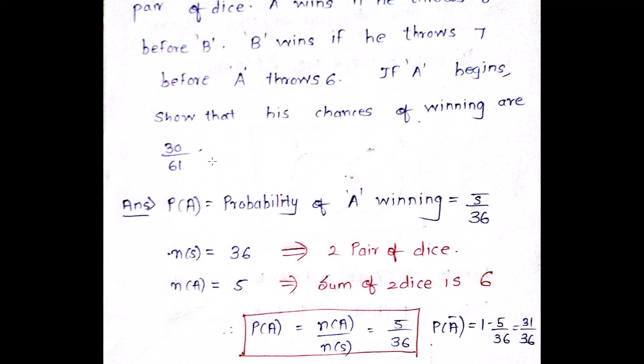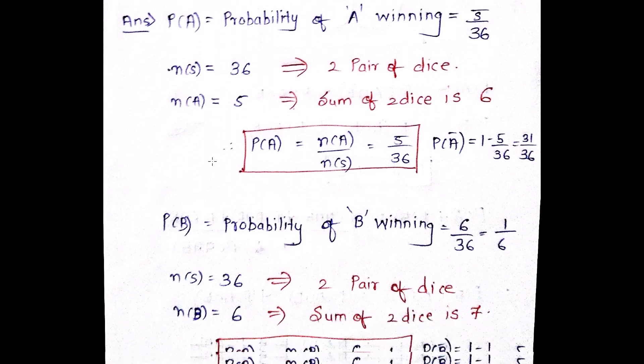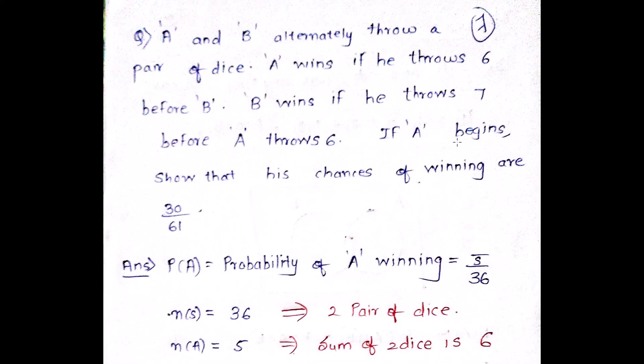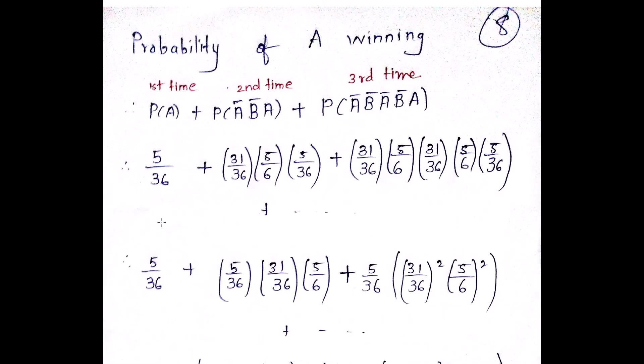So first what you need to do is that you need to find out the individual probability of winning of A and B. And then if A starts to throw first and B comes later, what is the probability that A wins 30 by 61. So in the first attempt, A will put the die and directly will get 6 value. So this is the value. It might happen that in first attempt, A might not get 6 value. So it is going to be A bar.